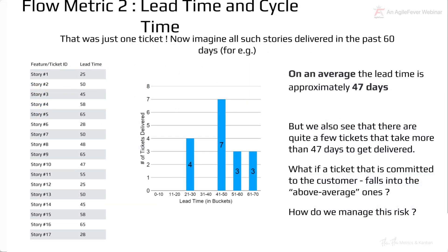That was just one ticket. If we look at all the stories, epics, and features delivered in the past 60 days, we can see a fictional data dump: story number one delivered in 25 days, story number two in 50 days, then 45, 65, and so on. Calculating the average, the lead time is approximately 47 days.